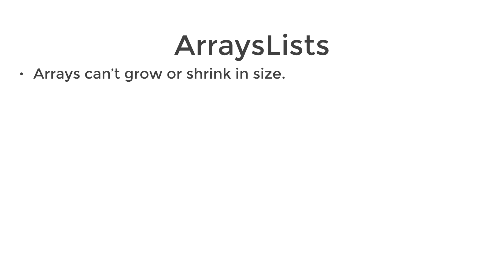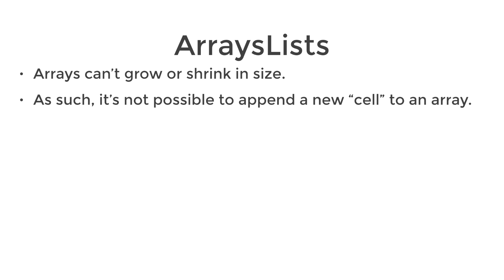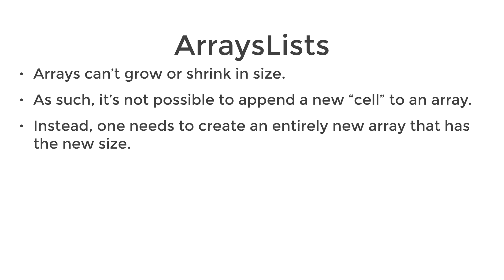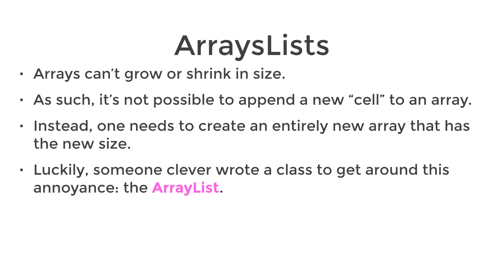The next thing I want to talk about are array lists. There are some limitations to using arrays that this class kind of gets around. The important one is that arrays can't grow or shrink in size, so we can't just append a sixth element to an array which has size five. This is why the array list was created — it's a class with a bunch of methods that allow us to get around this limitation.